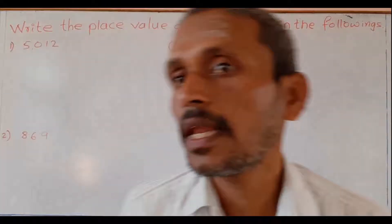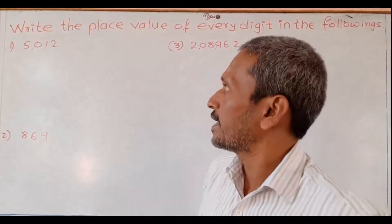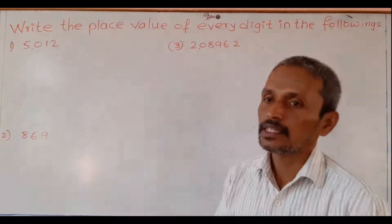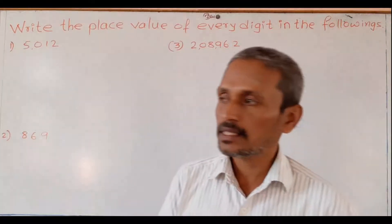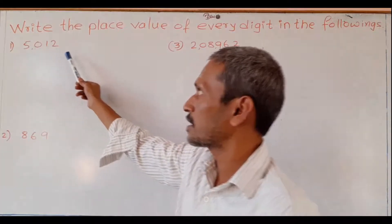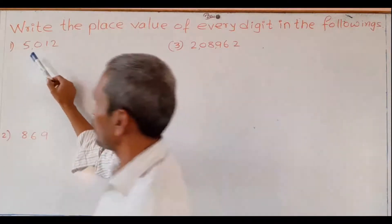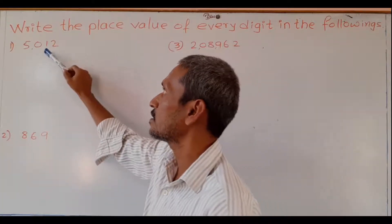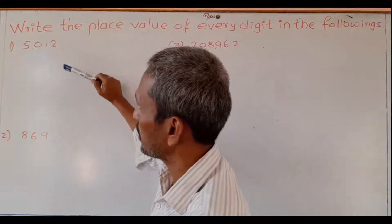Now we will learn how to find, or how to write, the place value of every digit in a given number. See here — 5012 is the given number. We will write the place value of each and every digit for this number.